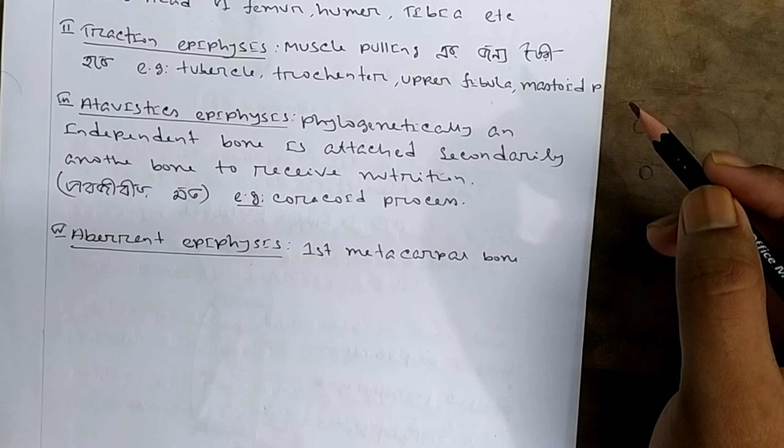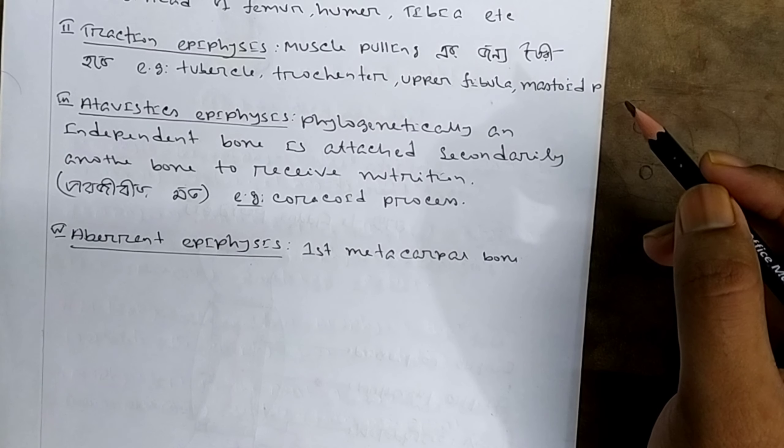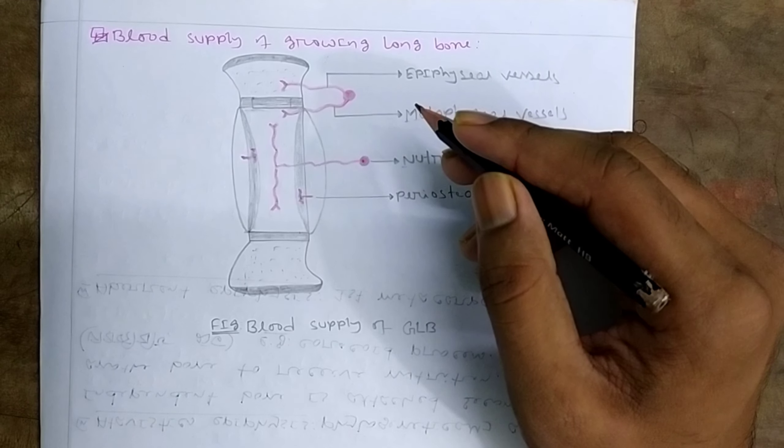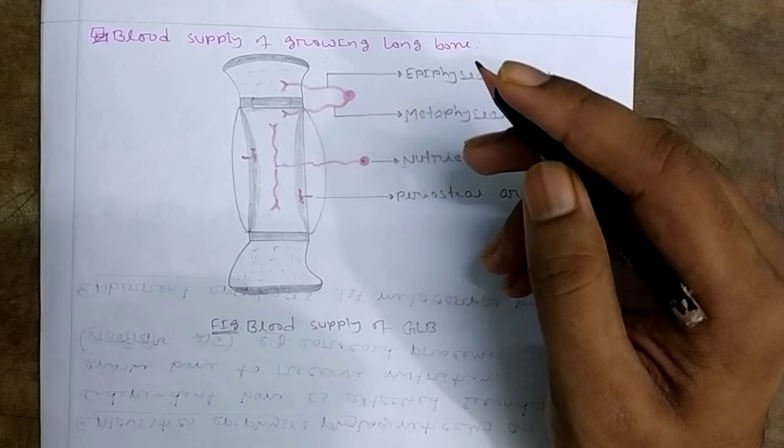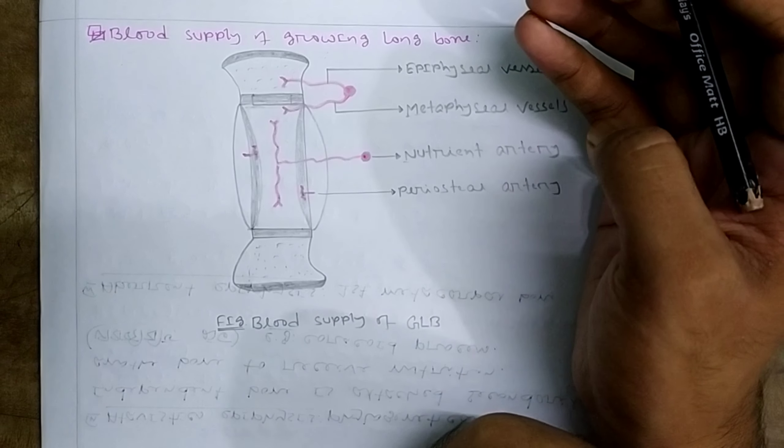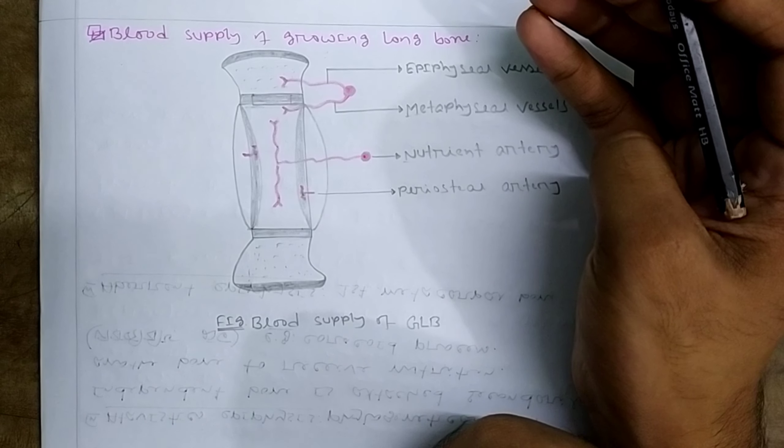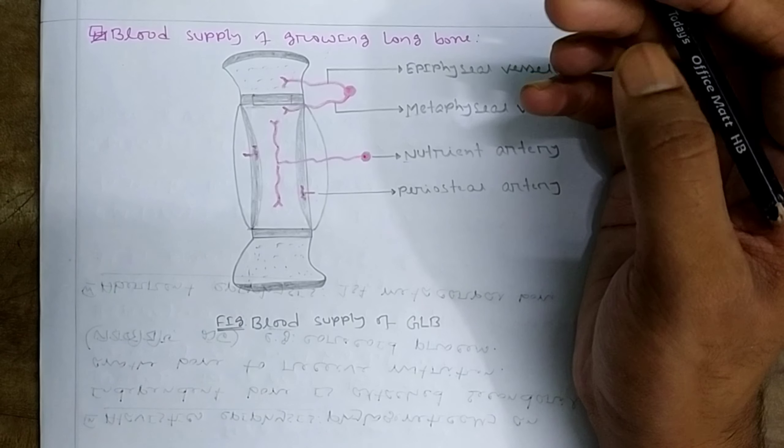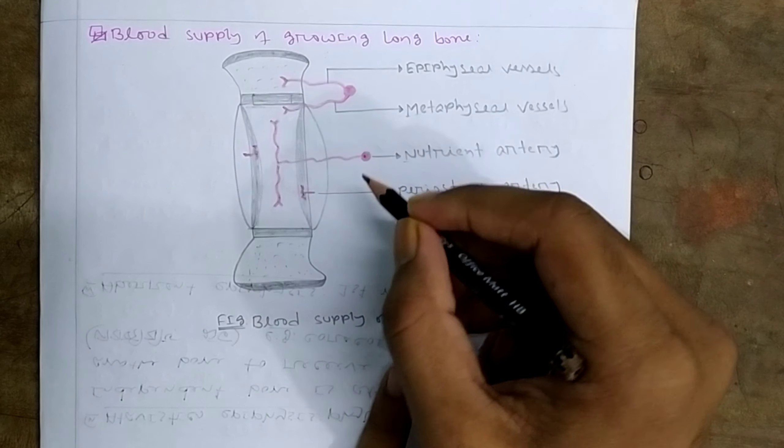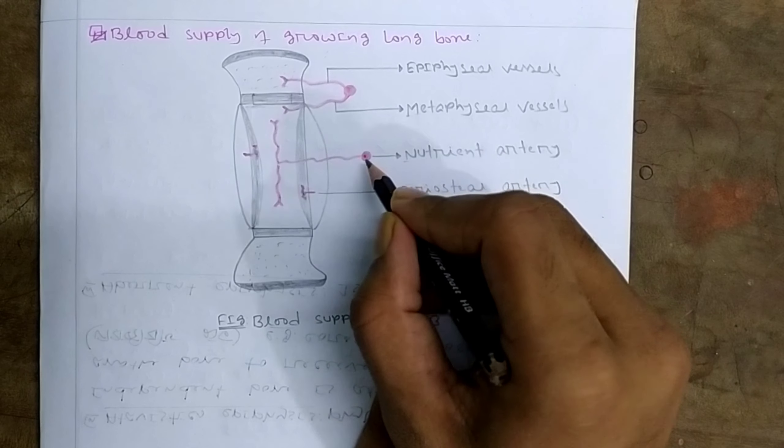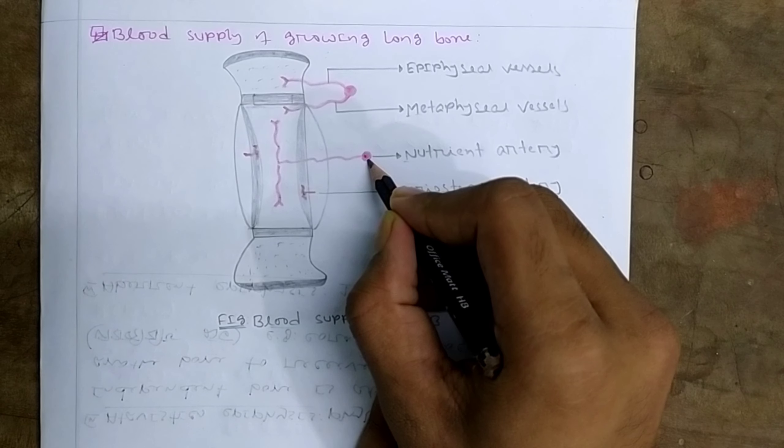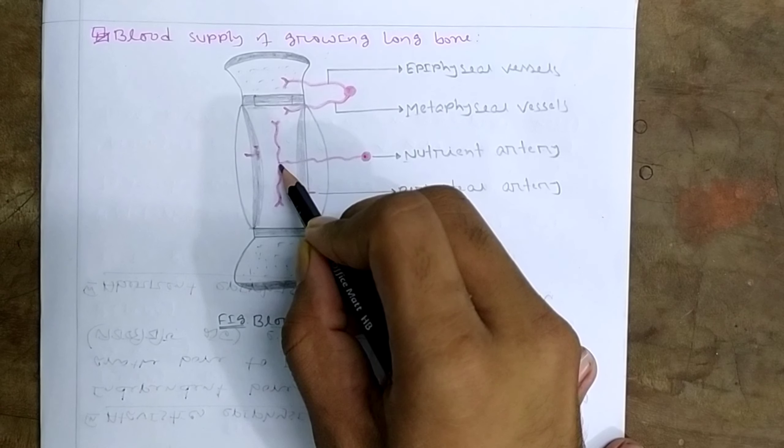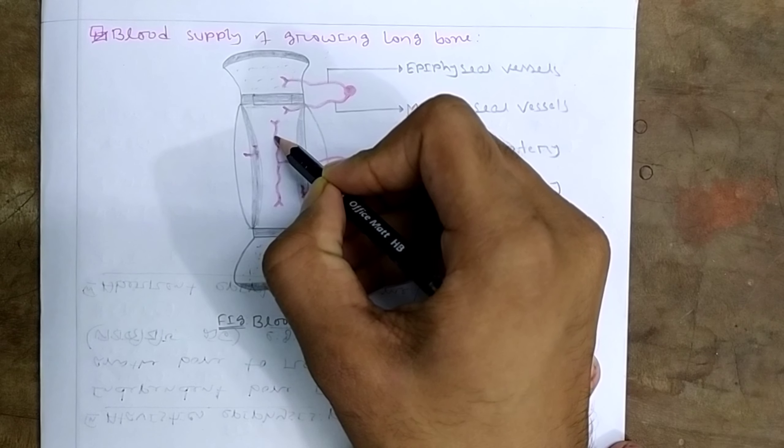The blood supply of the growing bone includes the main nutrient artery, the epiphyseal vessel, the metaphyseal vessel, and the periosteal vessel. The main supply is the nutrient artery. This nutrient artery provides blood supply to the metaphysis and diaphysis.